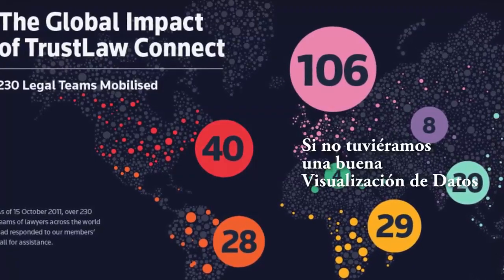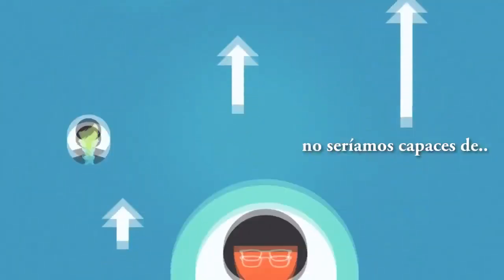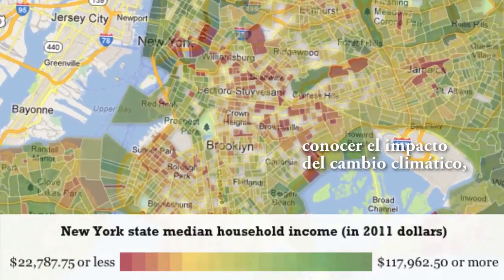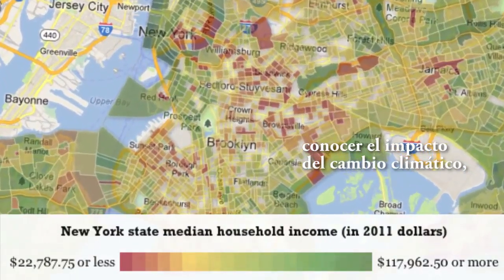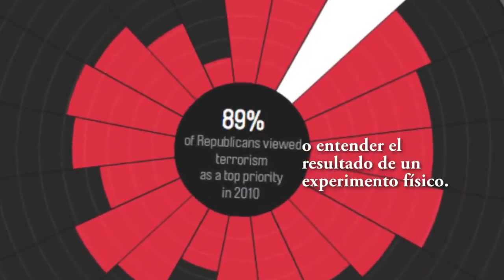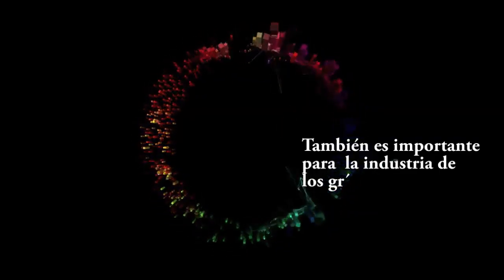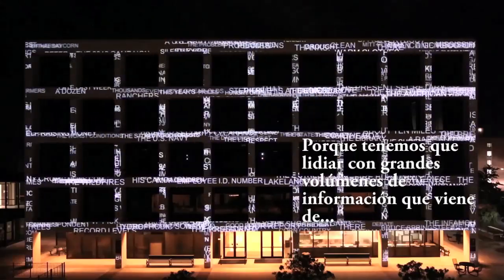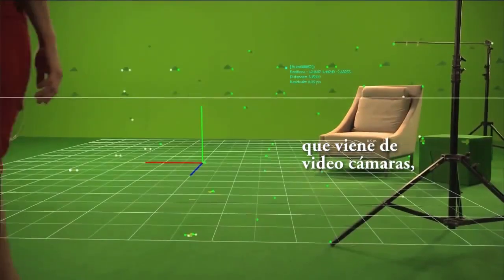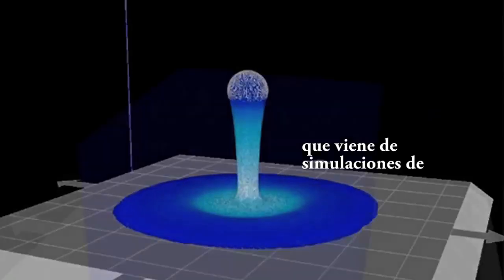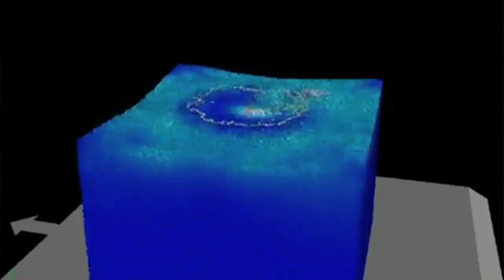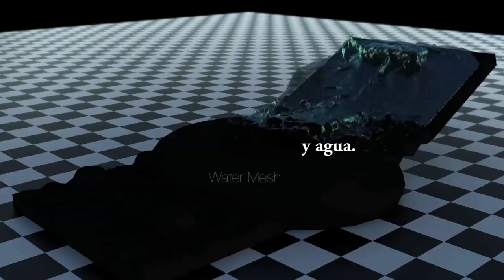If we didn't have good data visualization, we'd never be able to sort through the impact of climate change or global warming, or understand the results of a physics experiment. It's also important in the industry of computer graphics and visual effects, because we need to deal with lots of data coming from motion capture, video cameras, and simulations of fluids, air, clouds, and water.